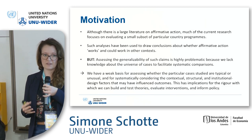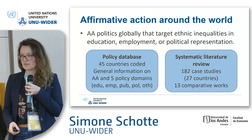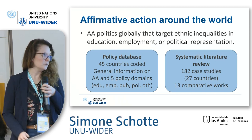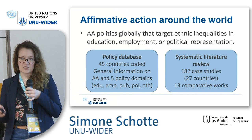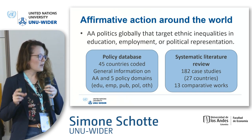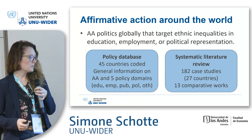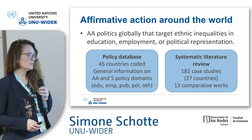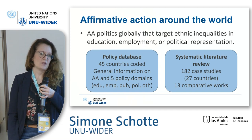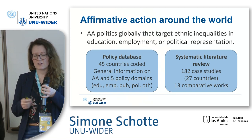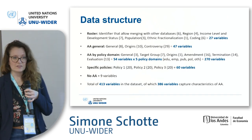We are working on two different outputs. I'm mainly going to talk about the database but also give you some glimpses of the systematic literature review we've been doing in parallel. At the moment in the policy database we have 45 countries coded, and what we are trying to provide is information on the implementation of affirmative action policy in general and then along five main policy domains: education, public sector employment, private sector employment, political representation, and any other. In the literature review we have evidence on a total of 195 studies, which include 182 case studies covering 27 different countries and 13 comparative works.